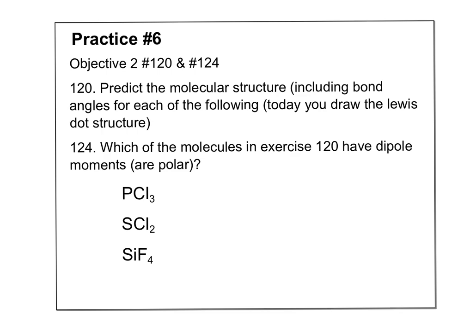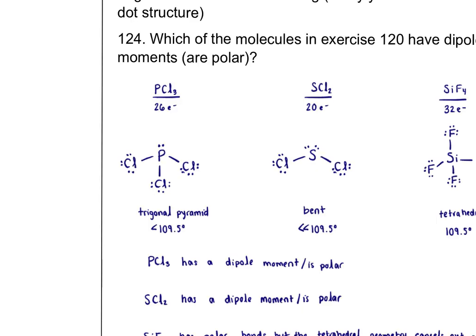And then 124 says which of the molecules have a dipole moment, meaning are they polar? Let's take a look together. PCl3 has 26 electrons, so what I did is I started with P in the middle, the three chlorines. I did single bonds. Those hold two. The 26 comes from one phosphorus with five valence plus three chlorine, each was seven, so five plus 21 is how I got 26. I connect with single bonds. That uses two, four, six, so I'm down to 20. I fill the outer: two, four, six, eight, ten, twelve, fourteen, sixteen, eighteen. That uses 18 of my 20, so I have two left in my piggy bank. I put them on my center.